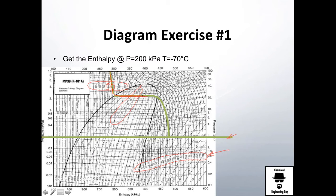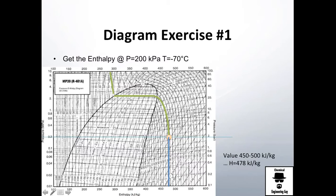Along this isotherm there's no change of temperature, and then you locate the intersection point. This point right here is the point we're looking for. To read the enthalpy, go directly down to the x-axis — I get something between 450 and 500, specifically 478 kilojoules per kilogram, which is the answer to this problem.